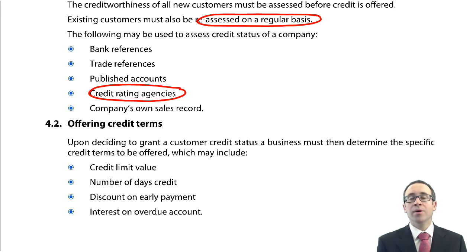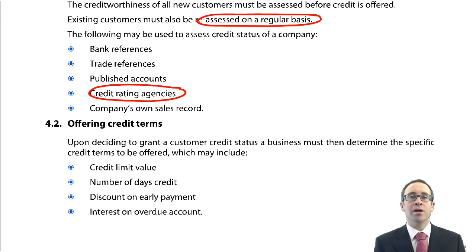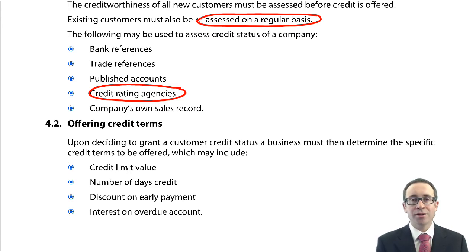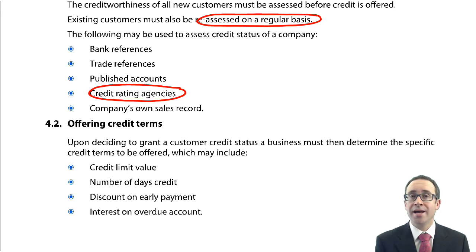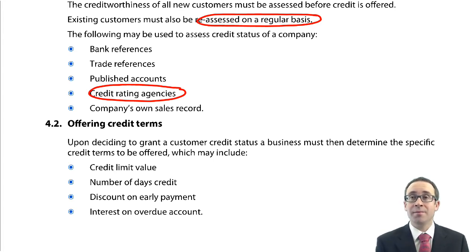We also look at the number of days of credit we are going to offer. We tend to offer a shorter period first to ensure they can pay on time, and then as time goes on we can offer a longer period once they have proved their ability to pay on time. We can also consider discounts on prompt payment, which is examined numerically in the exam — we shall see that shortly. And we also need to specify what happens if the customer pays late: we put in a deterrent by charging interest, specifying a specific amount of interest that will be charged if the customer pays late.